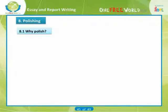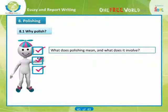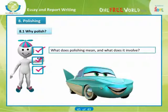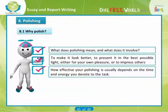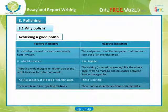Once you have reached this stage you have nearly finished. What does polishing mean and what does it involve? Imagine polishing a car or a piece of furniture — usually to make it look better, to present it in the best possible light, either for your own pleasure or to impress others. If it is an object that you value, it is worth making it look its very best. How effective your polishing is usually depends on the time and energy you devote to the task. Here is a list of indicators you can use to judge your polishing techniques. Most guidance notes given to students include these points, but they are not always followed.